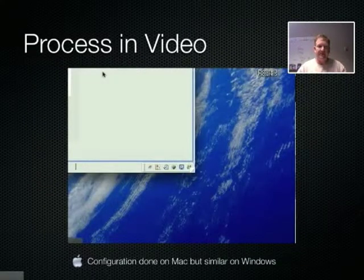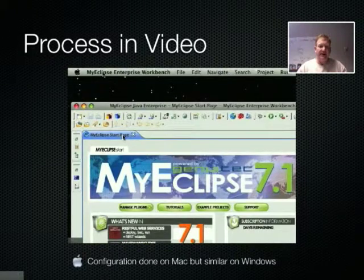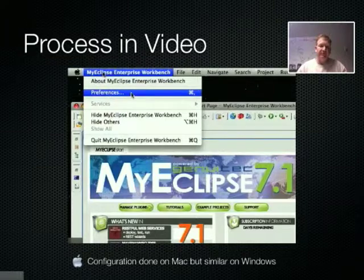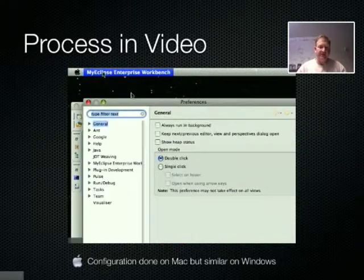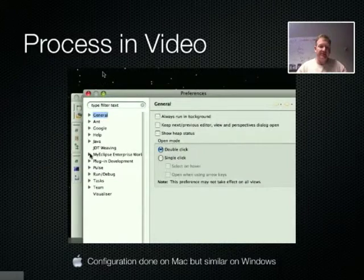Now let's look at the process in video. Here I've got MyEclipse IDE started, and I'm going to go ahead and bring down the Preferences panel. Now this is on an Apple. On a Windows machine you can find the same preferences under the Windows menu option, where you can see all the Preferences options.